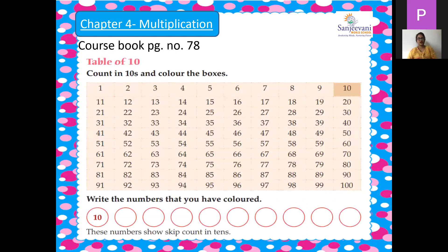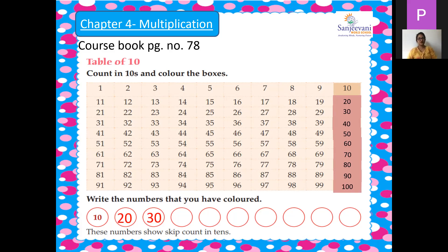Now come to page number 78. Now we will color the table of 10. 10 ones are 10, twos are 20, threes are 30, ten fours are 40, ten fives are 50, ten sixes are 60, ten sevens are 70, ten eights are 80, ten nines are 90, ten tens are 100. Now you will write the numbers whatever we have colored. You can just pause the video and you can write down the answers in your course book children.